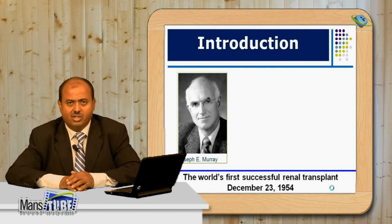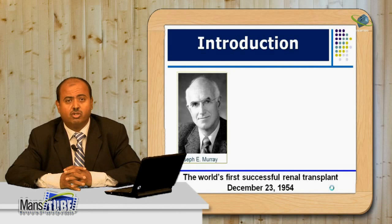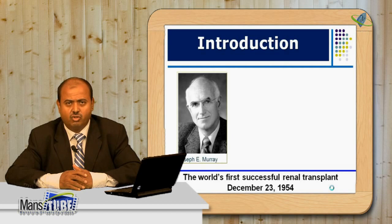This is Professor Joseph Murray, a transplant surgeon who carried out the first successful human kidney transplantation at Brigham and Women's Hospital, Harvard Medical School, in 1954. At that time, both immunological workup and immunosuppression were in their infancy. The question is: what is the secret of success of this case?